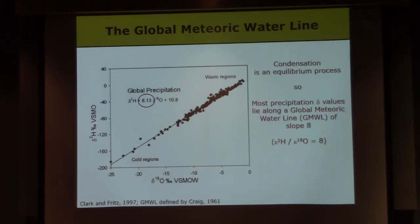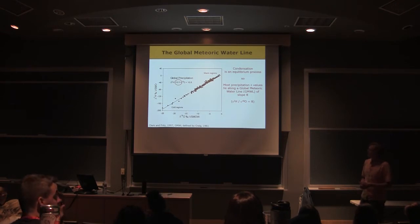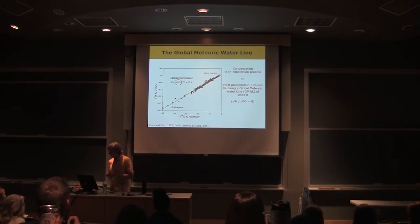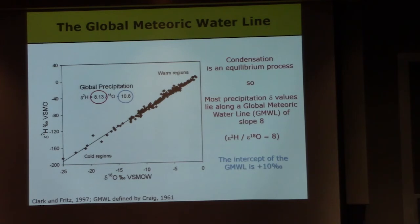So we've described why that is. Condensation is an equilibrium process. So as air masses evolve, if the process that's really giving us variability in rainfall isotope ratios is this Raleigh distillation process, the rain out of water, equilibrium condensation, then we should expect a relationship of about eight. We've solved half of the global meteoric water line problem here. Why is the slope eight? It's because equilibrium condensation is an equilibrium process. The other part of the global meteoric water line is the intercept, which has a value of plus 10.